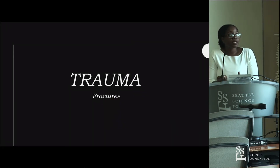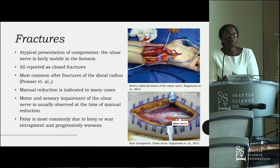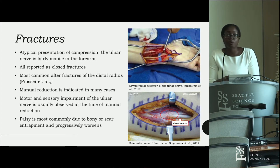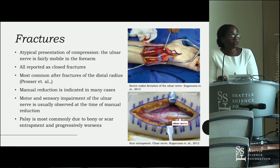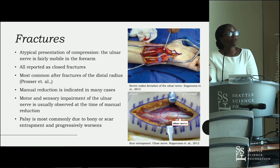Trauma is also one of the most common causes of ulnar nerve entrapment in the forearm. Fractures are a somewhat atypical presentation because the ulnar nerve is very mobile in the forearm. All reported cases of entrapment due to fractures were closed fractures with no bone exposure, and they are most common after fractures of the distal radius. The images show a distal radial fracture causing severe radial deviation of the ulnar nerve, and scar entrapment of the ulnar nerve.